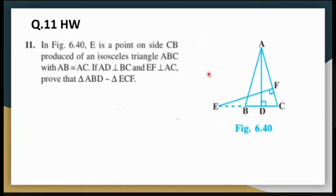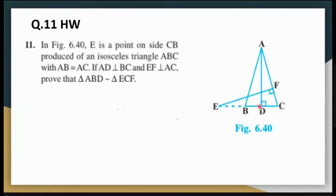Question 11 is a homework question. Given AD perpendicular to BC and EF perpendicular to AC, with ABC an isosceles triangle, angle B will be equal to angle C. Also angle ADB equals angle EFC equals 90 degrees. Hence the two triangles ABD and ECF are similar by the AA rule of similarity.